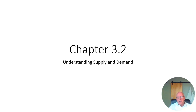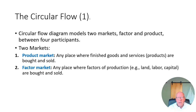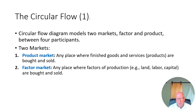Let's pick up with our understanding of supply and demand on the 3.2 lecture. Let's take a look at another model that economists have come up with to help us think our way through the issues dealing with markets. The first thing we're going to look at is a model called the circular flow model or diagram, and it shows two markets: both the factor market and the product market.